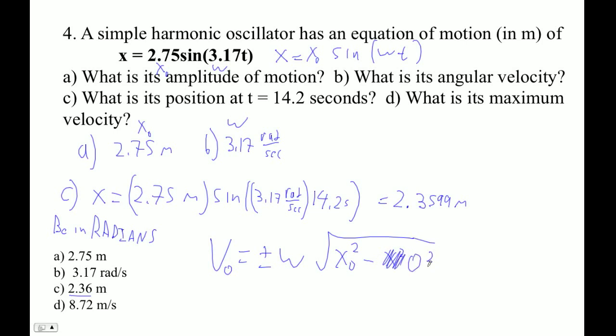Zero squared—don't forget to square the zero—so it ends up being omega x naught. V naught equals omega x naught, which is 3.17...